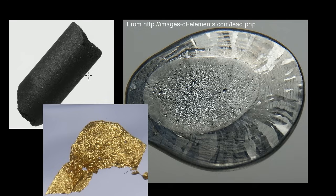Here are pictures of some of these substances. This right here is carbon, in its graphite form. This right here is lead. This right here is gold. And all of the ones shown here, which I got from this website, are in their solid form.